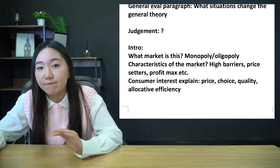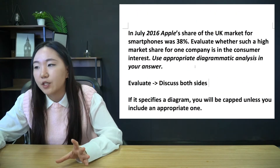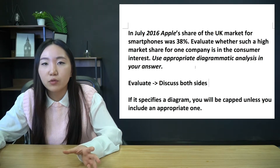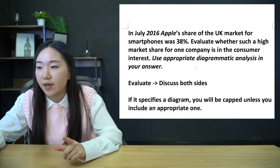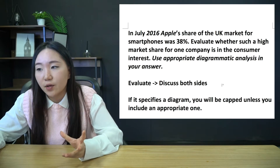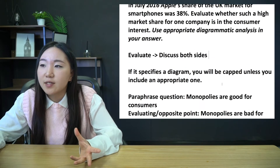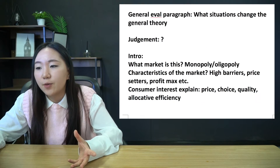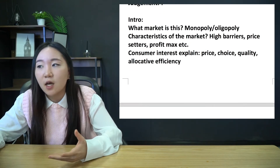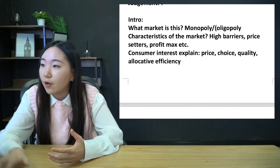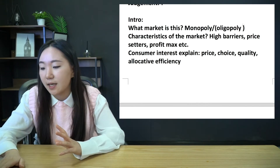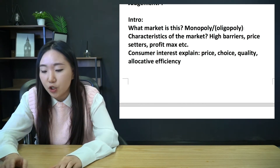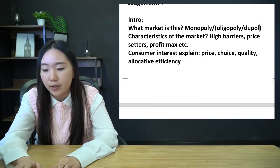For the introduction, we have to get rid of any vague language. In general, vague language is anything normative or anything that can cover a broader range of definitions than just one specific thing. In this case, I think it's going to be consumer interest - that needs defining. And then we have to understand what type of market Apple is operating in. I hope you can recognize this is a monopoly market. I've put oligopoly here just because, although by definition Apple is a monopoly as it has greater than 25% market share, it is more likely actually to be a duopoly from our knowledge of the UK smartphone market.